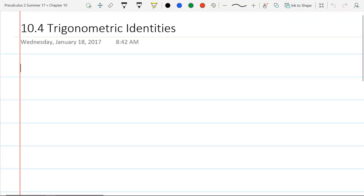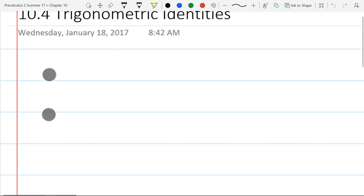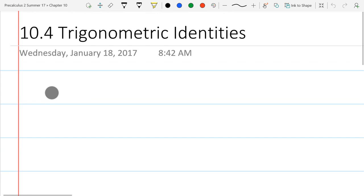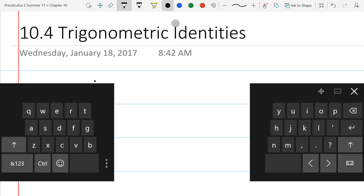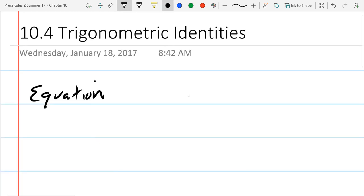We're going to start out with identities. This is a long section 10.4, so I'm going to break this into pieces. First we're going to start talking about what is an identity. You've seen equations before. An identity is an equation. Equations are any time you have two expressions with an equal sign.